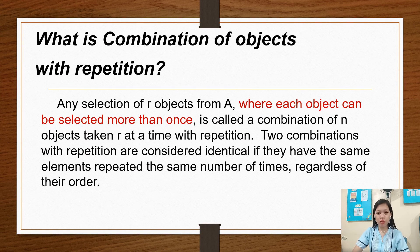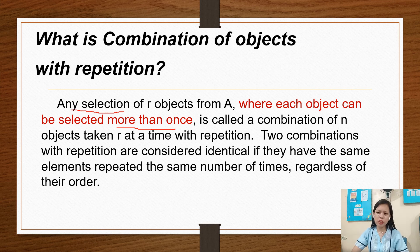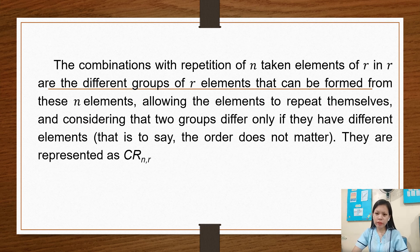Combination of objects with repetition is any selection of R objects from N where each object can be selected more than once. It's called a combination of N objects taking R at a time with repetition. Two combinations with repetition are considered identical if they have the same elements repeated the same number of times, regardless of their order.